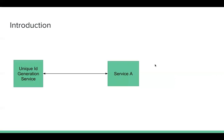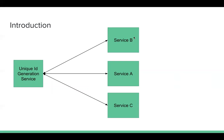Let's take a simple example. We have a unique ID generation service, and each time this service can generate one unique ID. We have a service A — every time service A calls the unique ID generation service to get a unique ID. For example, this service may be something like a user registration service. As time passes, the unique ID generation service becomes very popular, and Team B and Team C also want to use it. Things become very complicated.